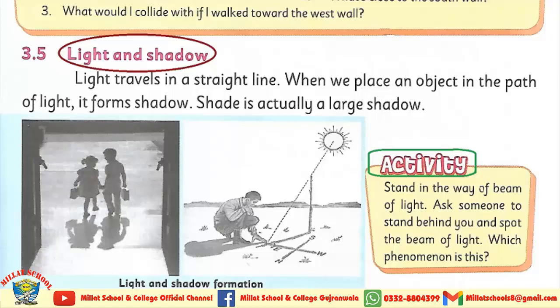अब हम इस activity को देखते हैं — light and shadow, यानि जमीन पे हमारा जो साया बनता है, उसको हम कैसे देख सकते हैं या वो बनता कैसे है। First of all आपको यह समझना पड़ेगा कि जब हम रोशनी का रास्ता किसी चीज से रोक देते हैं तो साया बनता है। For example, जैसे आप धूप में खड़े हुए हैं तो जमीन पर आपका साया बनता है — इसलिए क्योंकि आपका जिस्म रोشनी को रास्ते में रोक देता है। जब भी कोई चीज रोشनी को रोक देती है तो आपका shadow — आपका साया — बनता है।